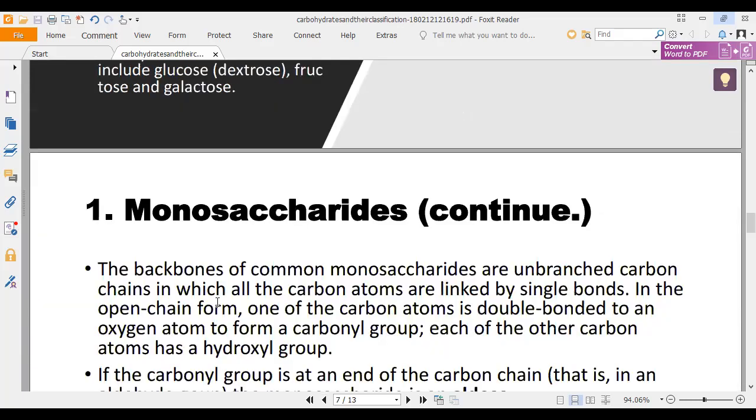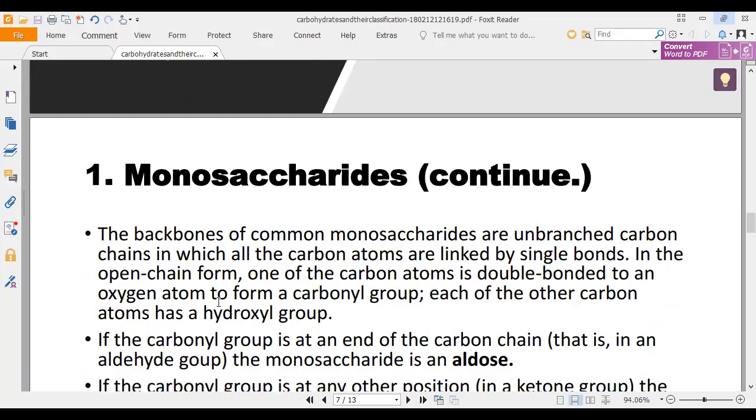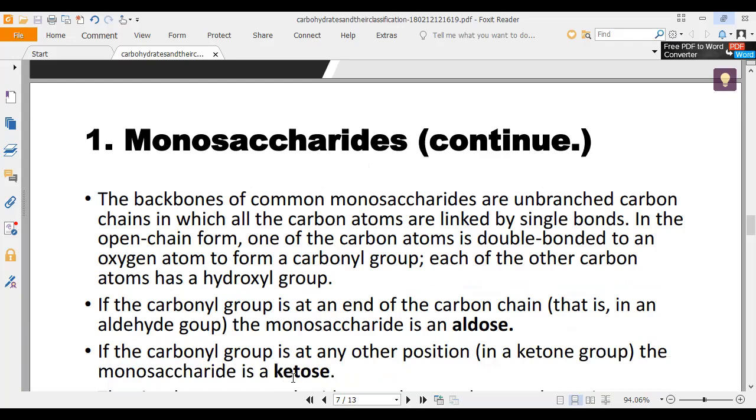The backbones of monosaccharides are unbranched carbon chains in which all of the carbon atoms are linked by single bonds. In the open chain form, one of the carbon atoms is double-bonded to an oxygen atom to form a carbonyl group. Each of the other carbon atoms has a hydroxyl group. If the carbonyl group is at the end of the carbon chain, it is an aldehyde group and the monosaccharide is an aldose. If the carbonyl group is at any other position, it is a ketone group and the monosaccharide is a ketose.